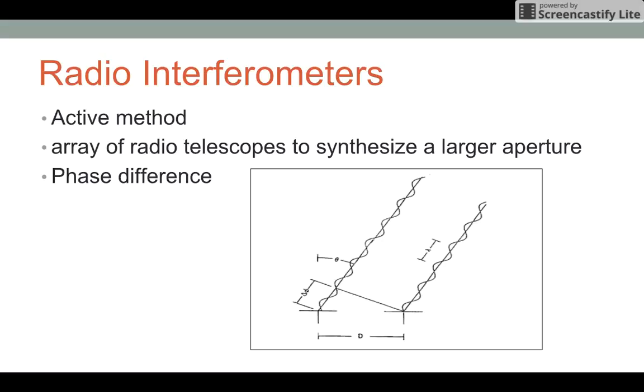We're going to look into two different active methods of radio telescope observation. The first of which is radio interferometers.